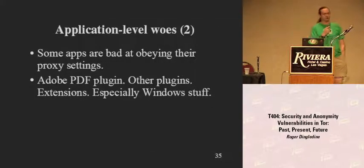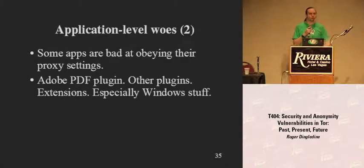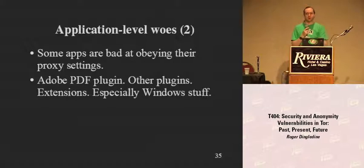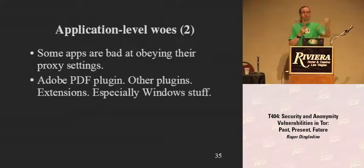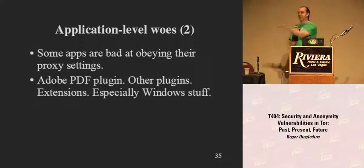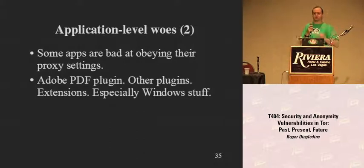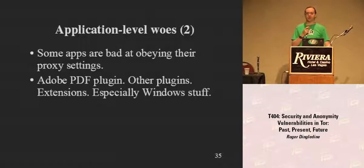There are more application-level woes. Pretty much all browser plug-ins can be told to ignore proxy settings. So if you set up Firefox to proxy through Tor and you also run Flash and Java, the website gives you a Flash applet that says 'screw this proxy stuff, I just want a direct connection.' Then you're in bad shape. H.D. Moore put out an attack like this a few years ago, and Kyle has had an unending stream of attacks like this. If you want to switch from using Tor to not using Tor cleanly, in Windows the answer is basically: reboot. Windows and IE are so integrated that you can't fully separate them.